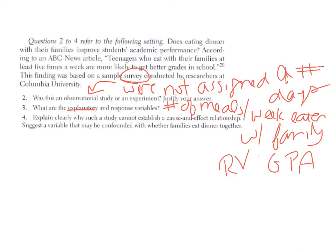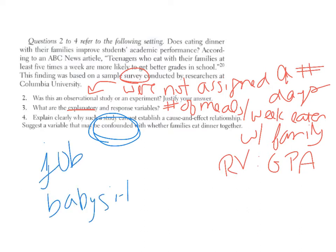For example, kids who work at night can't eat as many meals with their family and also don't have as much time to study, which could lead to lower grades. Families where parents have two jobs may work at night, so they can't eat together, and an older sibling may need to babysit younger siblings, leaving less time to study. You can't determine whether it's the teenager's job, babysitting, or anything else causing lower GPA — not just how often they eat dinner together with their family.